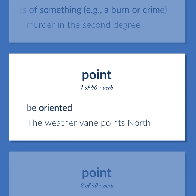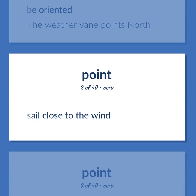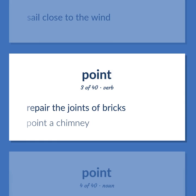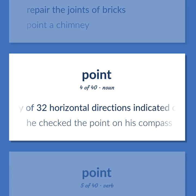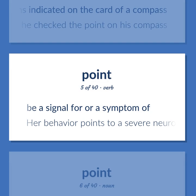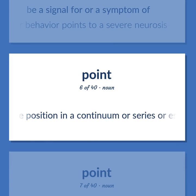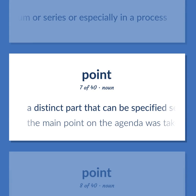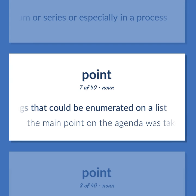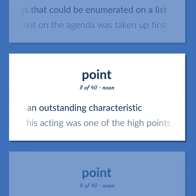Point. Be oriented. Example: The weathervane points north. Sail close to the wind. Repair the joints of bricks. Example: Point a chimney. Any of 32 horizontal directions indicated on the card of a compass. Example: He checked the point on his compass. Be a signal for or a symptom of. Example: Her behavior points to a severe neurosis. A specific identifiable position in a continuum or series or especially in a process. A distinct part that can be specified separately in a group of things that could be enumerated on a list. Example: The main point on the agenda was taken up first. An outstanding characteristic. Example: His acting was one of the high points of the movie.